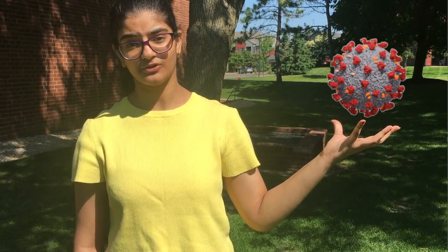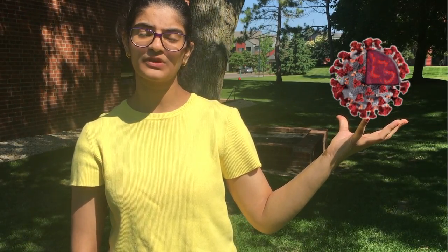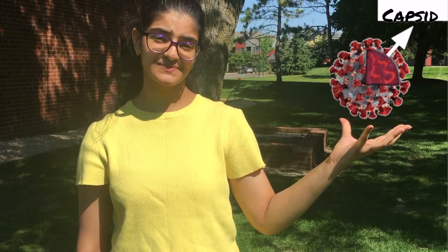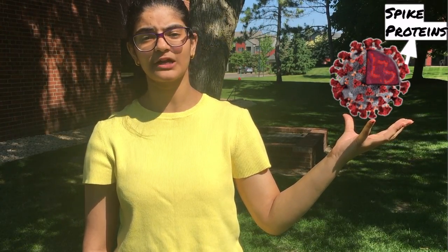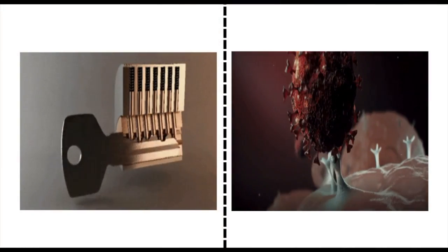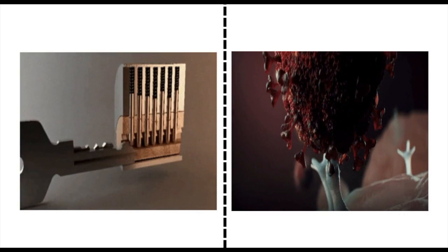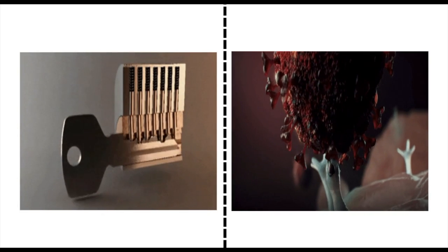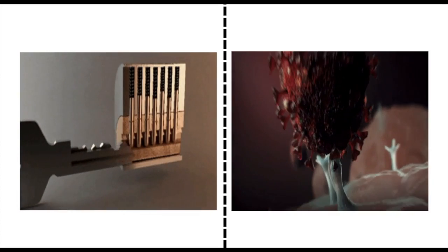Here we have a single virus particle. If we open this up, we can see that it contains RNA. Over the RNA is the capsid, and on top of the capsid are the spike proteins. This virus has proteins on the outside of the capsid which are very specific to the cell receptor they attach to, just like how a key is particular to which lock it opens.